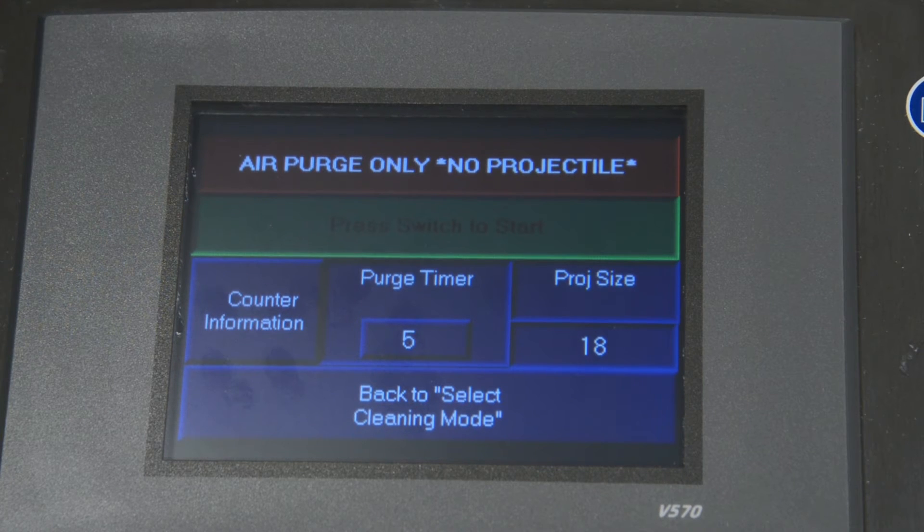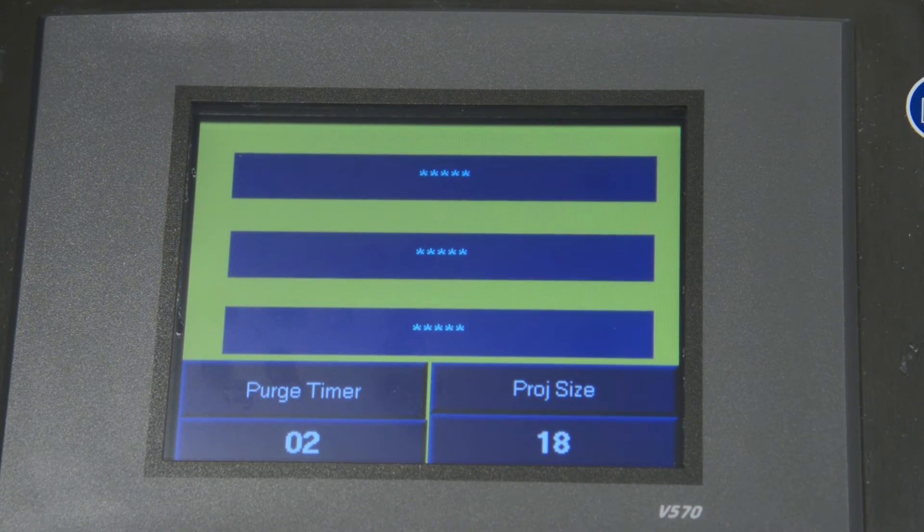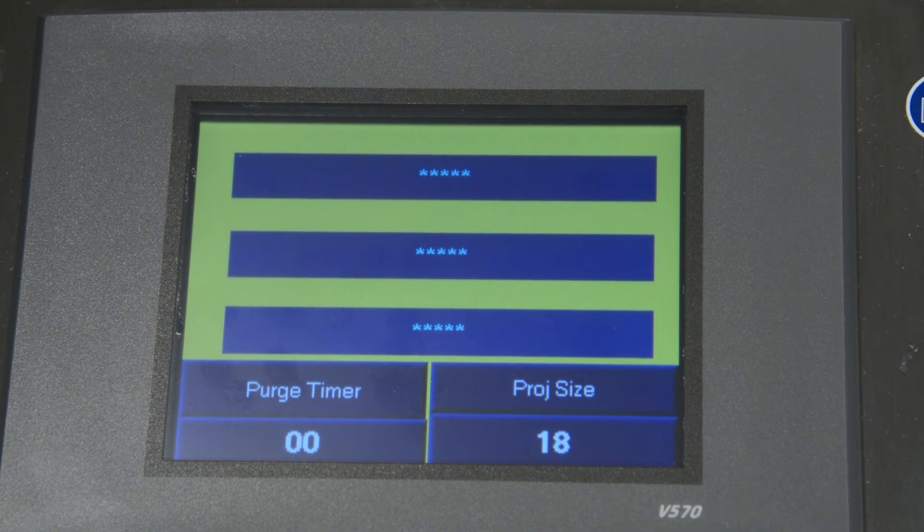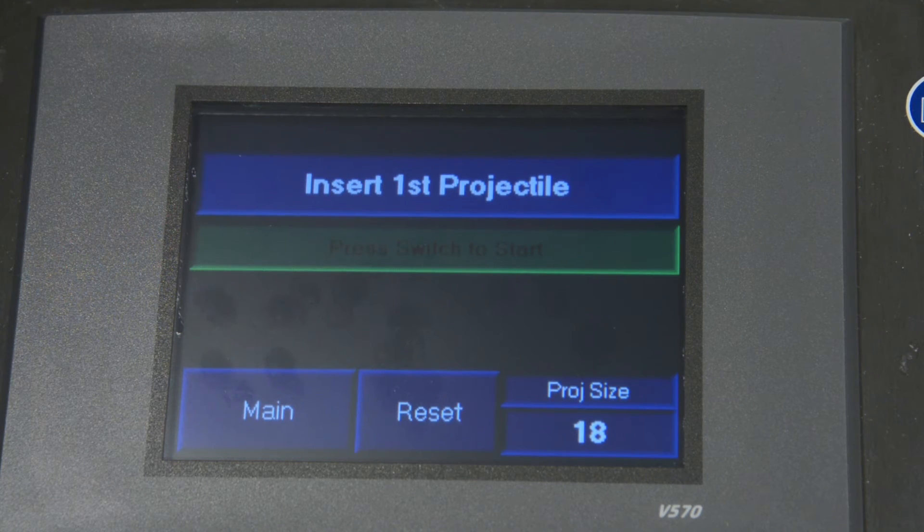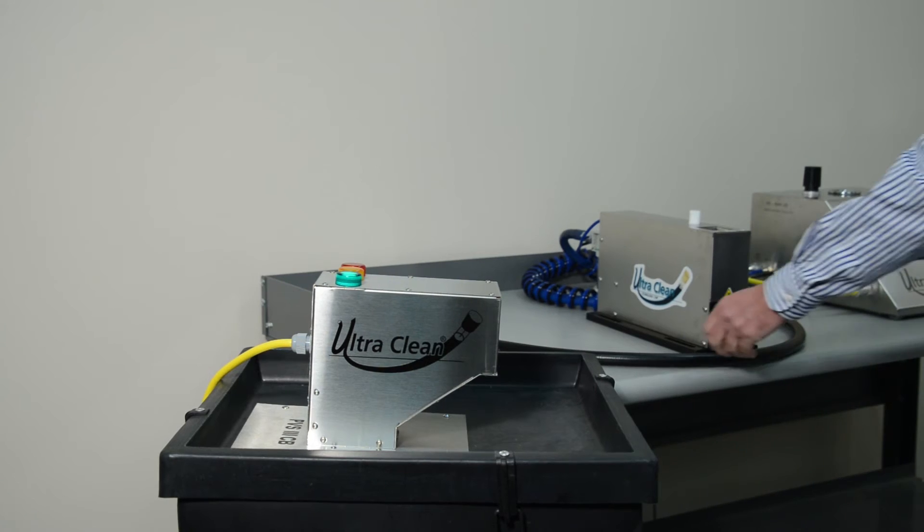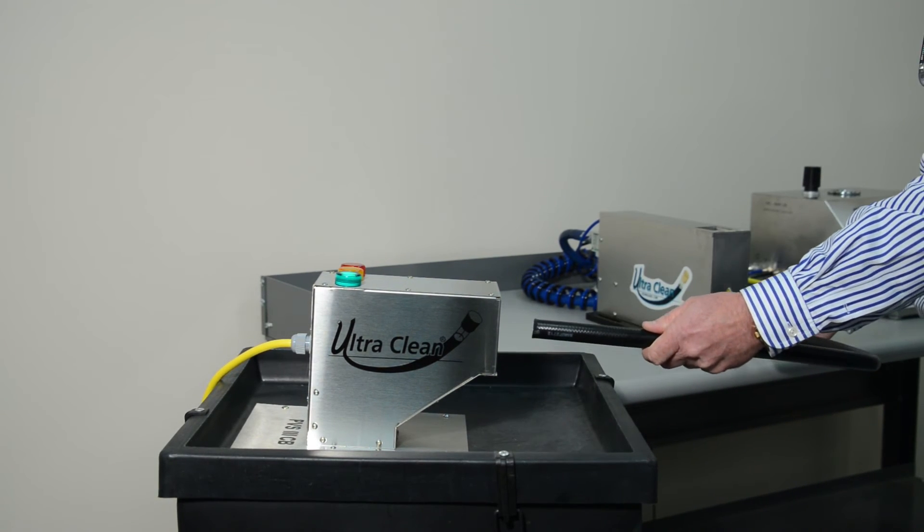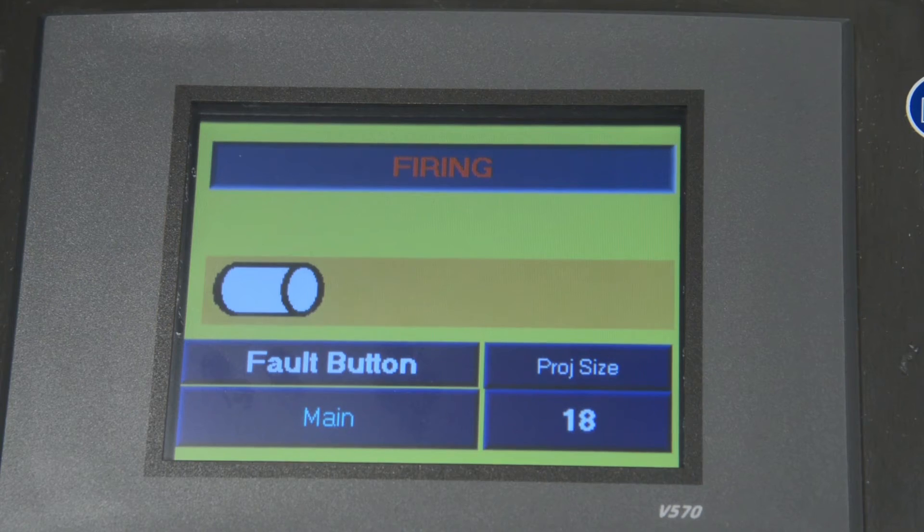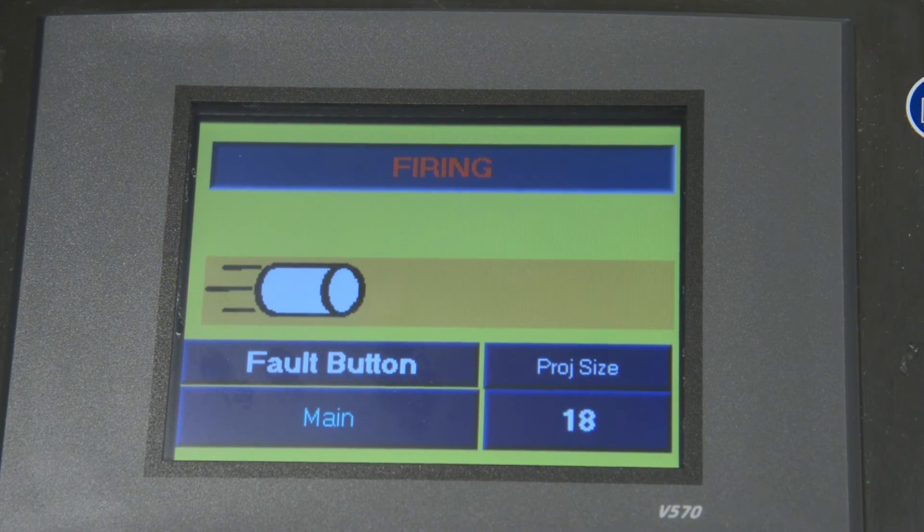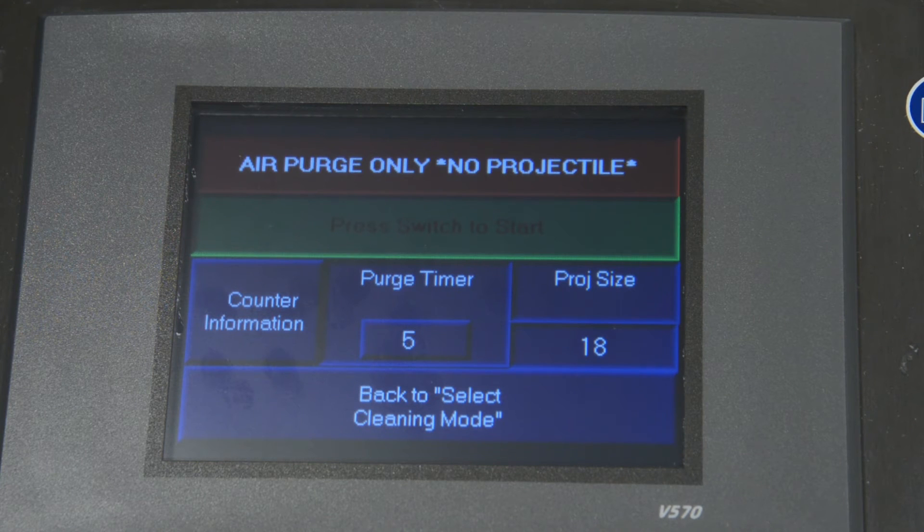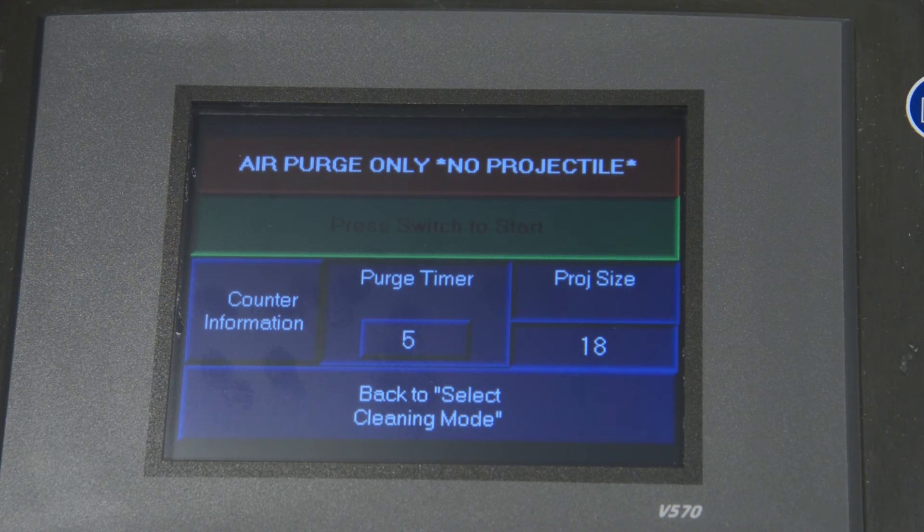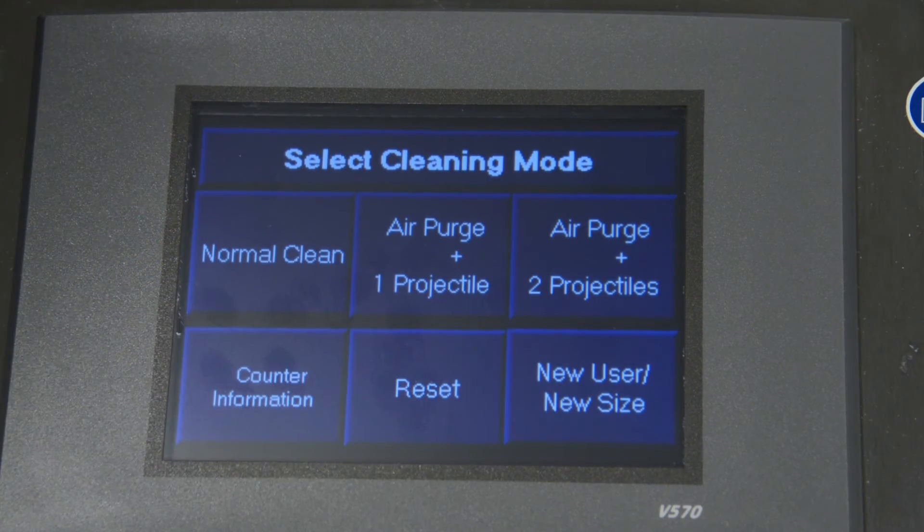Immediately after the Air Purge cycle is initiated, a yellow screen appears with the words Air Purge only blinking on and off until the timer goes to zero. After the Air Purge is complete, insert an UltraClean projectile into the appropriate launcher and press the switch to activate the firing cycle. After projectile verification, you will be taken back to the Air Purge screen to start the same cleaning process.